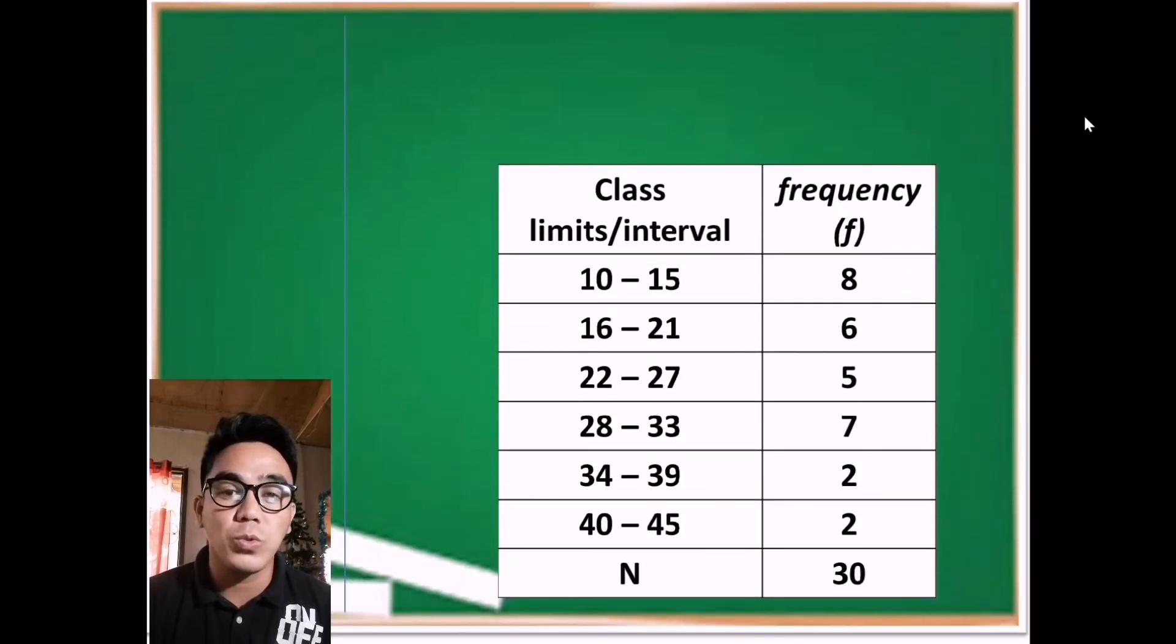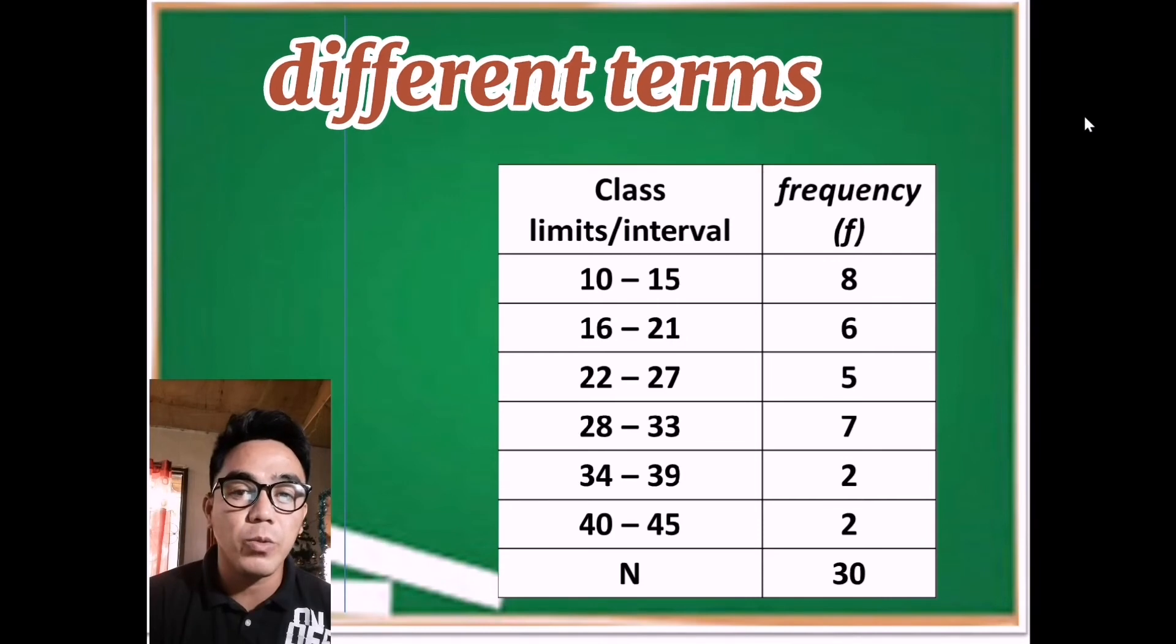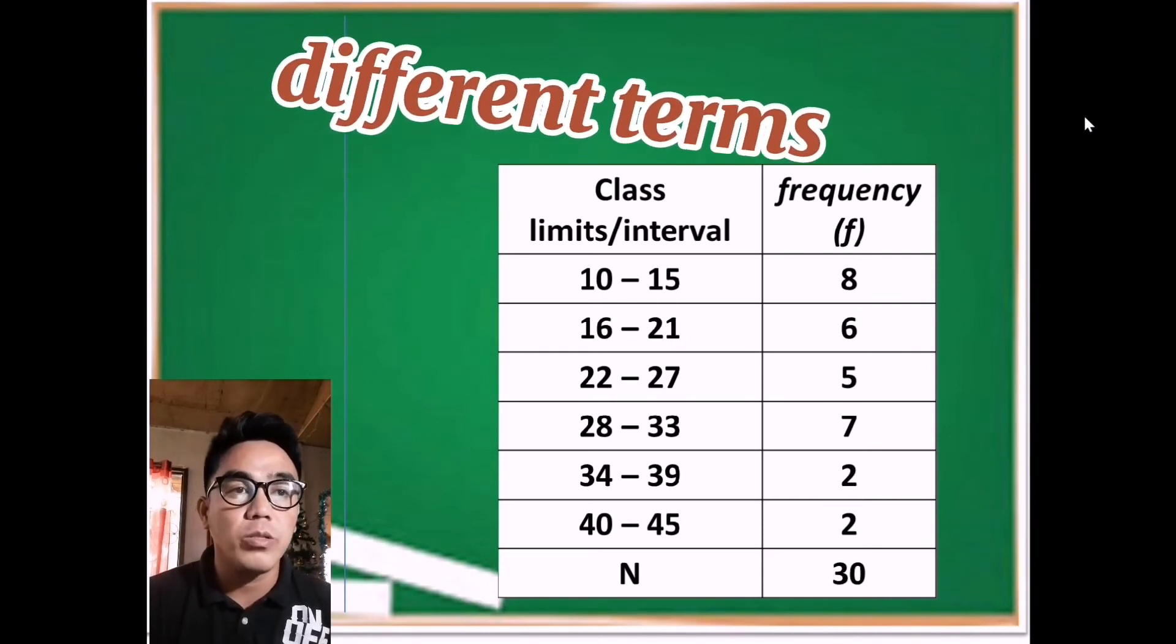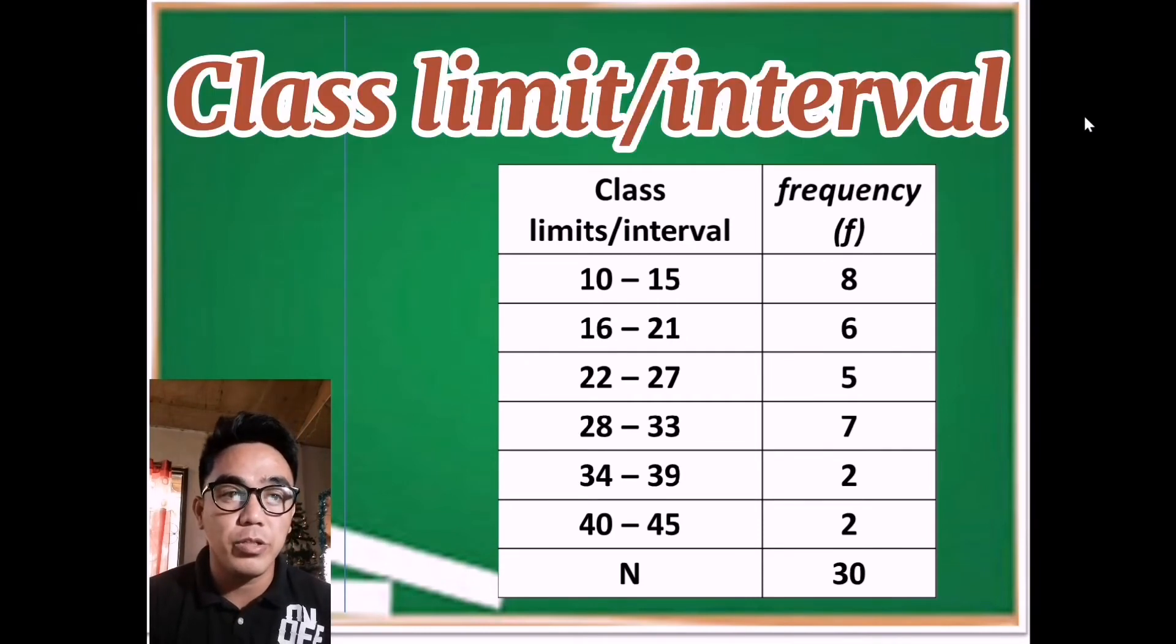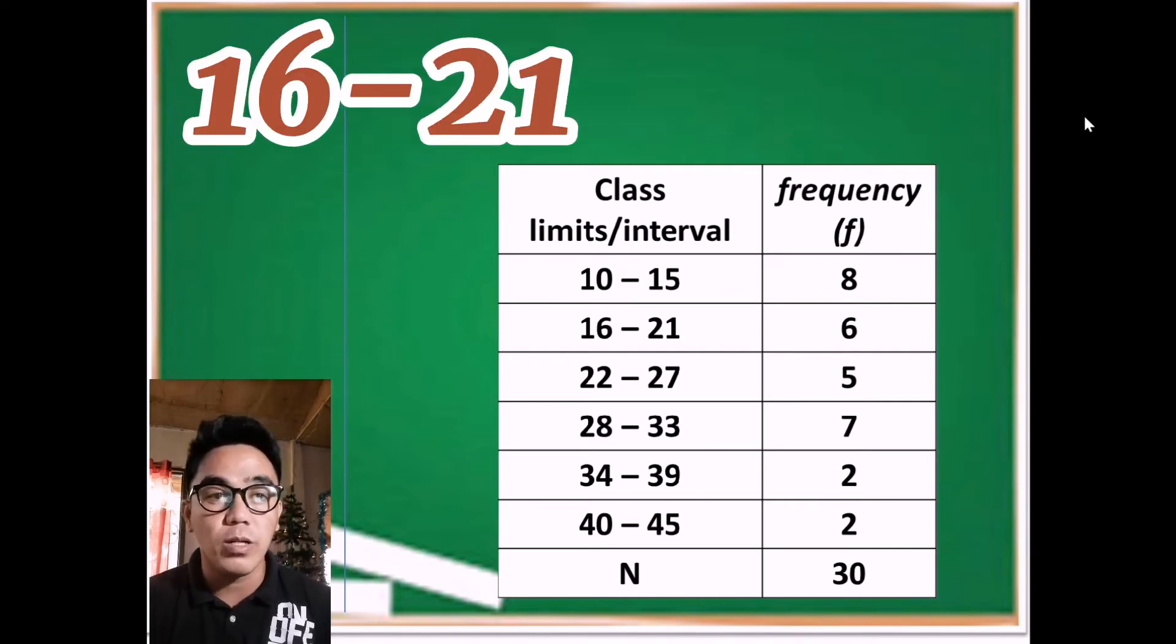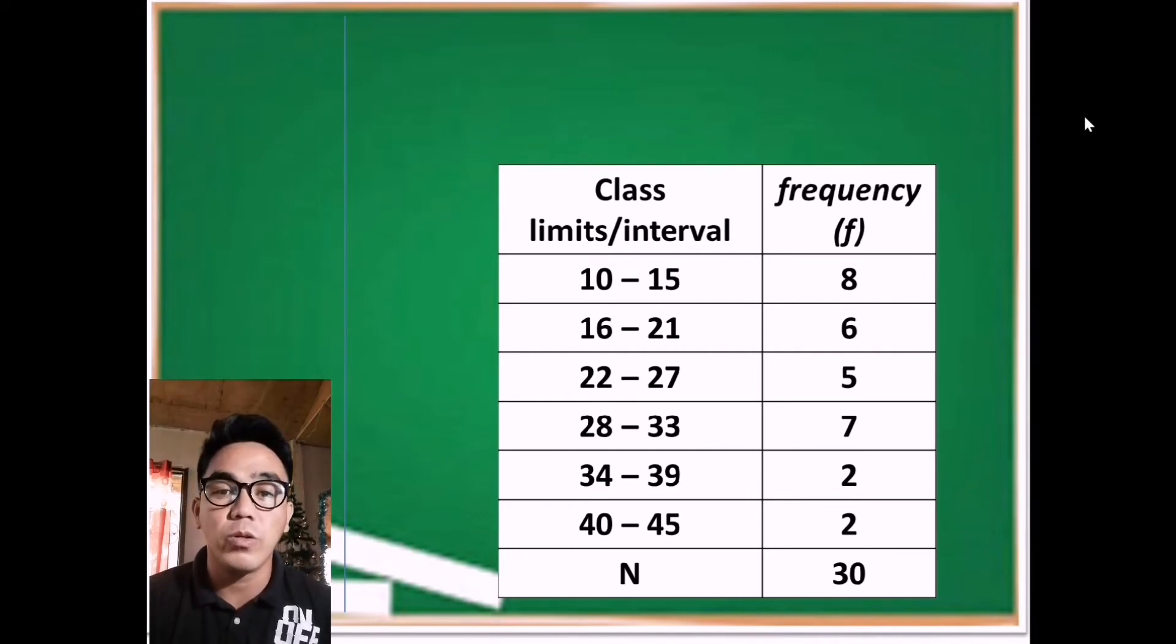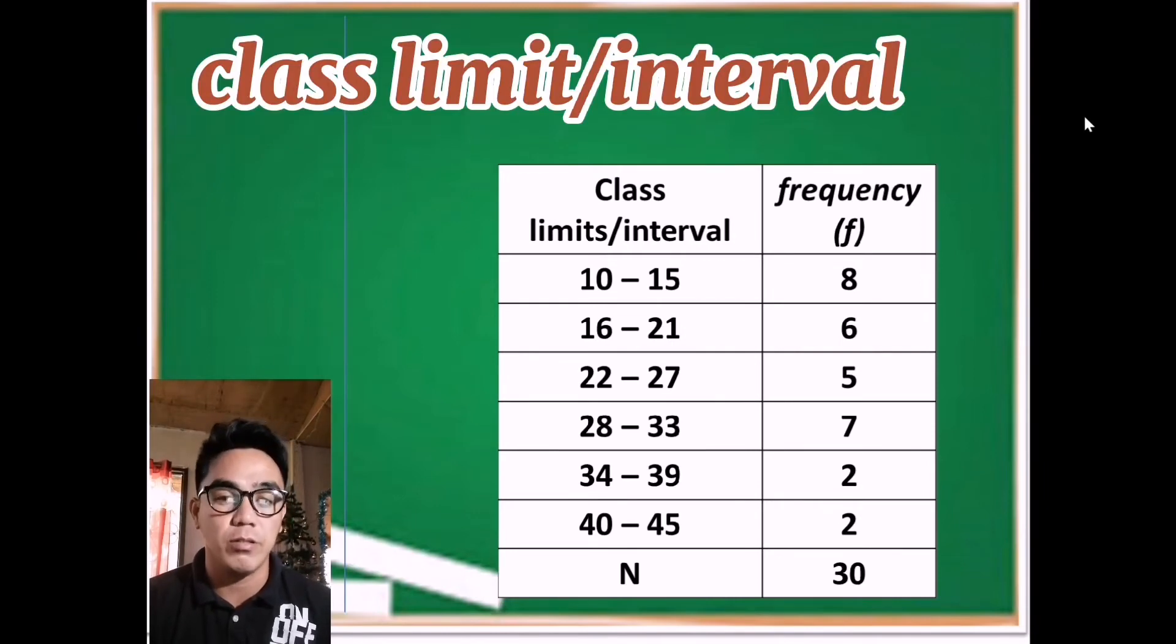So right now we're going to determine the different terms when we're talking about frequency distribution. When we talk about class limits or intervals such as 10 to 15, these are the range or the width from the lower limit to the upper limit: 10 to 15, 16 to 21, 22 to 27, down to 40 to 45. That is what we call class limit or class interval.